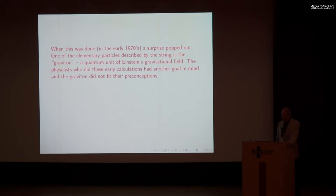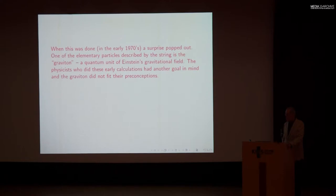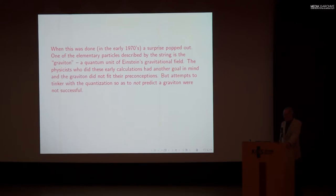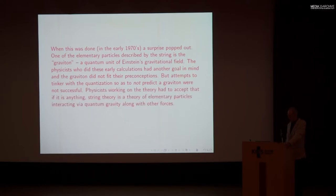One of the elementary particles described by the string is the graviton — a quantum unit of Einstein's gravitational field. The physicists who did these early calculations were not trying to describe gravity. They had another problem in mind, which David Gross briefly explained in the first lecture — it had to do with the nuclear force.